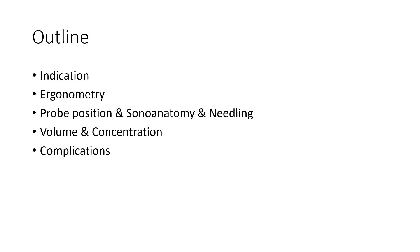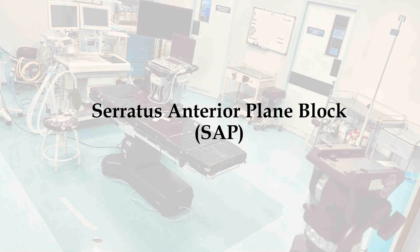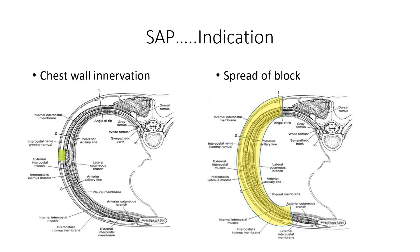This is the outline of my presentation today. The serratus anterior plane block was introduced by Lankung in 2013. Initially, it was introduced to give anesthesia for breast surgery, but because of the spread of the block, they noticed that it is also good for rib fracture.